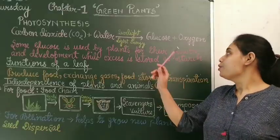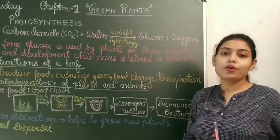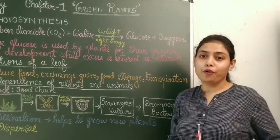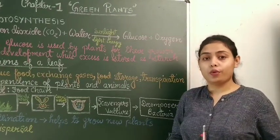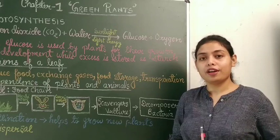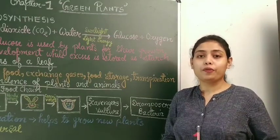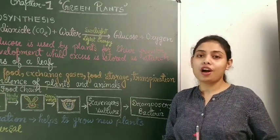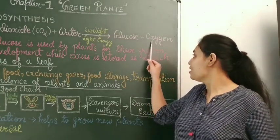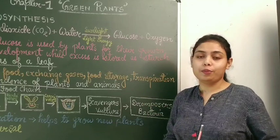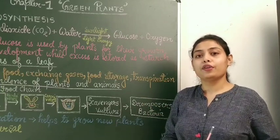Plants produce glucose during photosynthesis. Glucose is a form of energy for plants — they use it for their growth and development. Extra glucose is stored in the form of starch. By-products like oxygen are released into the atmosphere and used by other living organisms.